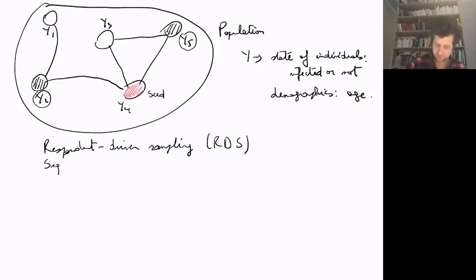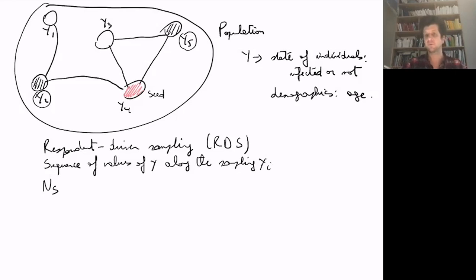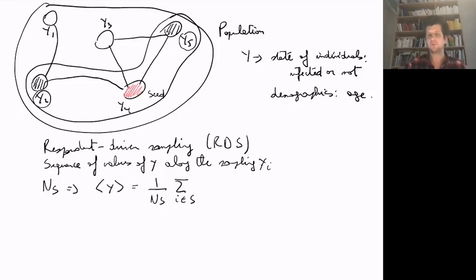One popular approach is Respondent-Driven Sampling (RDS). We start from one seed individual, who receives some coupons — say two — to share with friends. Those friends participate in the experiment, providing their y value, and then contact two of their own friends, recursively exploring the graph. After observing n_s nodes, a naive estimator for the average of y would be (1/n_s) · sum_{i in S} y_i.